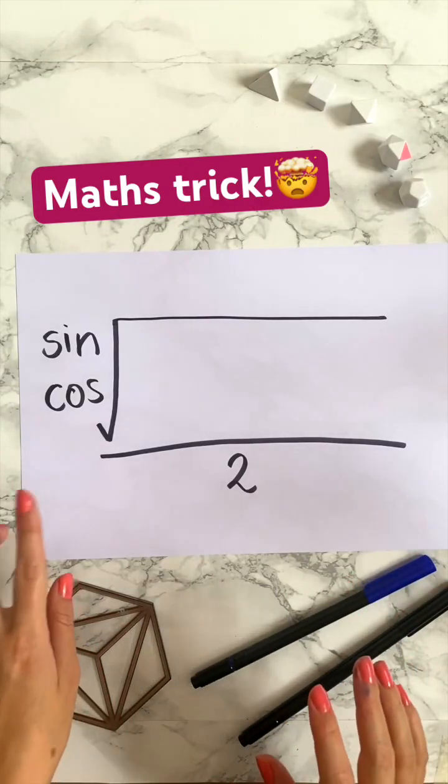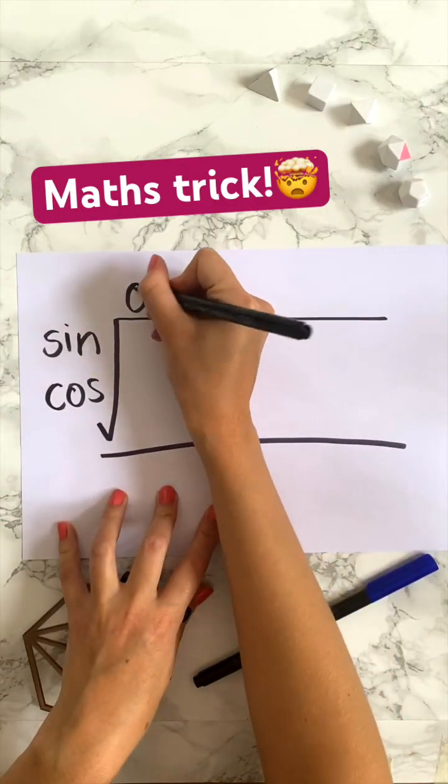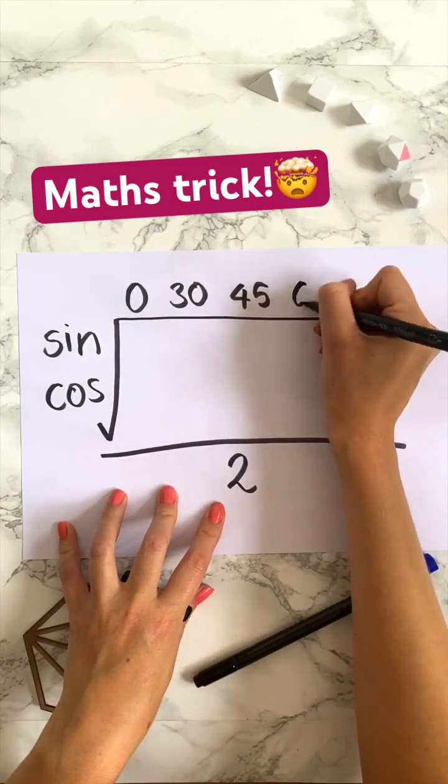Here's a super quick way to remember sine and cos values. We're going to write 0, 30, 45, 60 and 90.